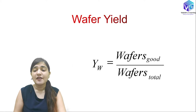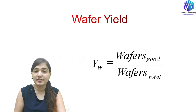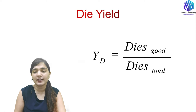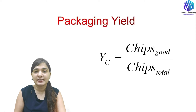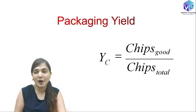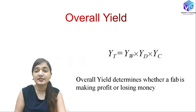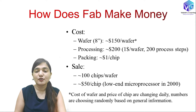Wafer yield is the ratio of good wafers to total wafers produced. Similarly, die yield is good dies upon total dies. Packaging yield is good chips upon total chips. The overall yield is the wafer yield multiplied by the die yield multiplied by the packaging yield. This overall yield determines whether a fabrication is making profit or losing money.